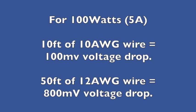So to recap, for a 100 watt solar panel using 10 foot of 10 AWG wire, we have a 100 millivolt voltage drop, which isn't too bad. And for 50 foot of 12 AWG wire, we have an 800 millivolt voltage drop, which is pretty severe.